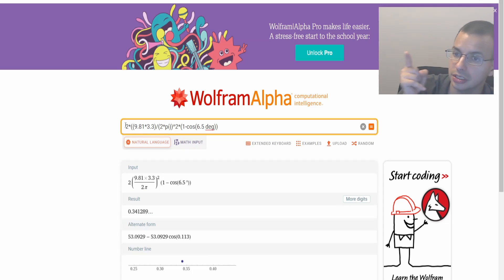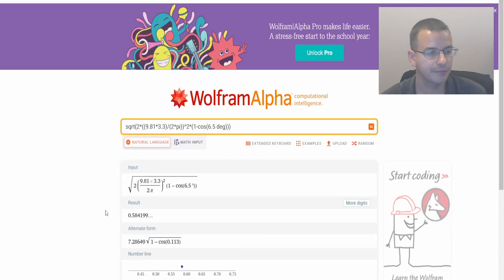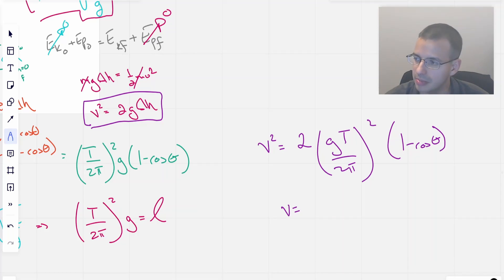Oh, but we don't want this. We don't want V squared. We want velocity, V, by itself. So we square root this. 0.58. Yep, seems plausible. Maybe. Might even be correct.